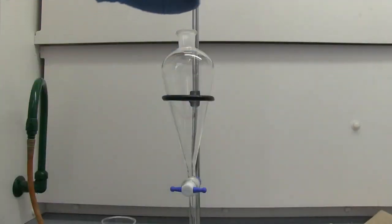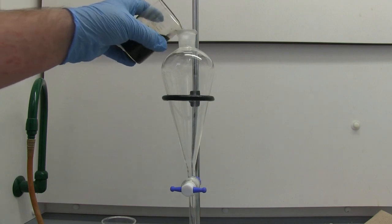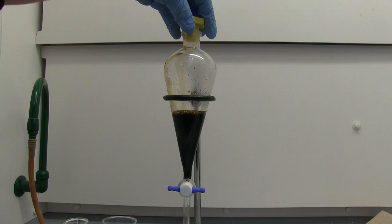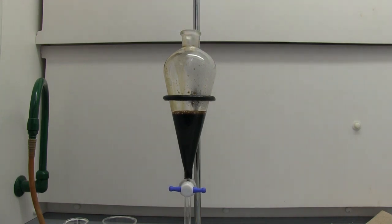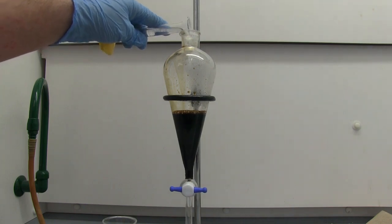We just want to transfer the liquid. There are still boiling stones in there so I'm going to carefully pour it and try not to get the boiling stones. You've all done extraction before with separatory funnel. I'm going to add in ten milliliters of dichloromethane.